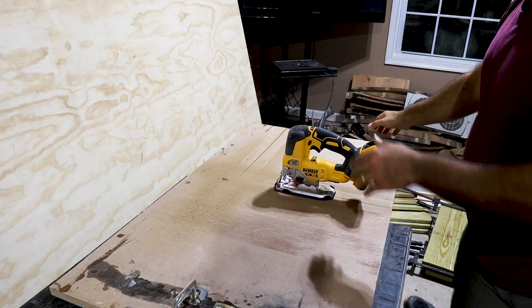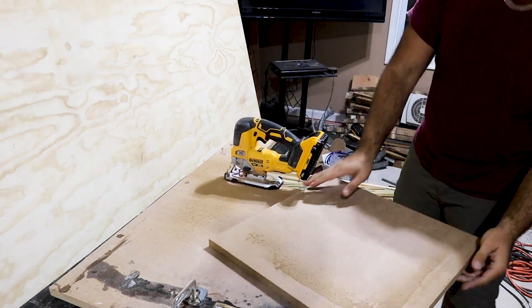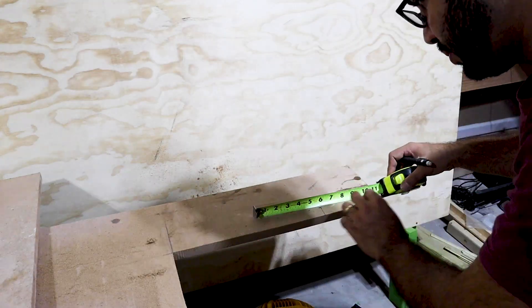We start by cutting out a square that's 18 by 18 inches, as well as two rectangles for brick holders at five and a half inches by one inch.